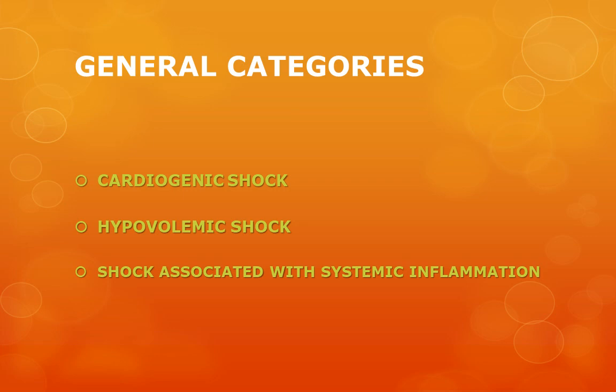In cardiogenic shock, the main defect lies at the level of the heart. Various conditions that affect the heart may result in cardiogenic shock—for example, ventricular arrhythmias which result in decreased pumping of blood, myocardial infarction, obstruction to the outflow such as pulmonary embolism, and cardiac tamponade, which we studied in pulmonary thromboembolism.